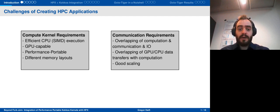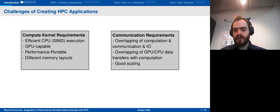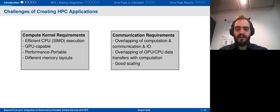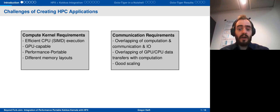Developing applications for high performance computing isn't exactly straightforward. We have a lot of requirements for the compute kernels: we want efficient CPU execution, we want to be able to run on the GPU, and we want performance portability between the two. Depending on the scenario, we might want to try different memory layouts. The simulation shouldn't just run on one compute node alone — we want it to run on an entire cluster, so we have specific communication requirements. With MPI, we need to manually care of overlapping computation with communication, not to mention IO issues. As we throw GPUs into the mix, we also want to overlap GPU and CPU data transfers. And of course, in the end, it hopefully should scale well.